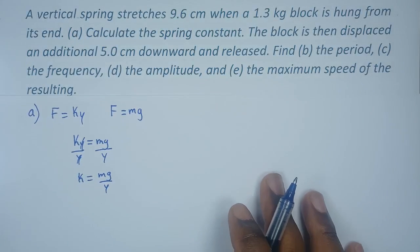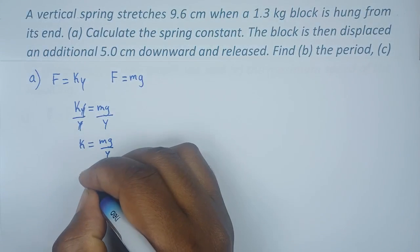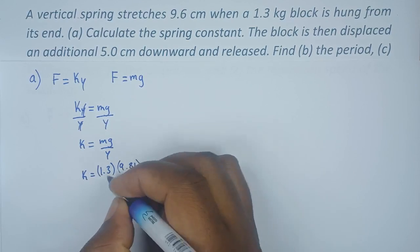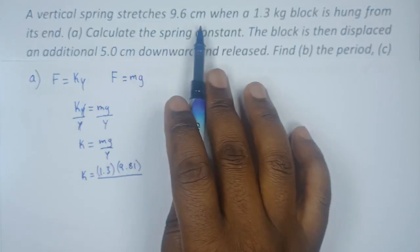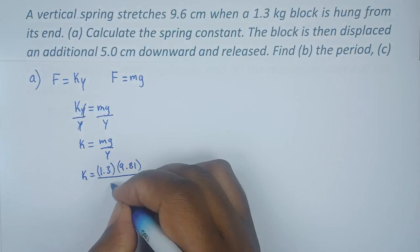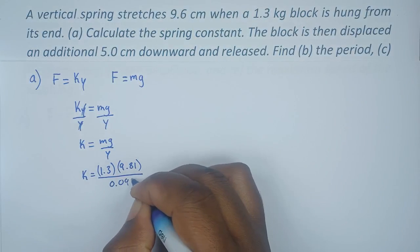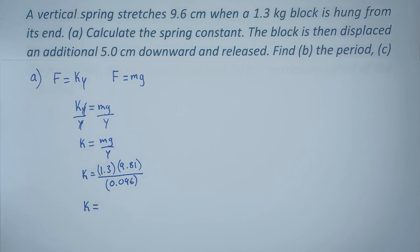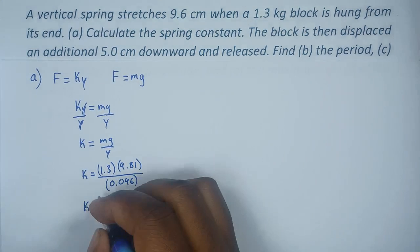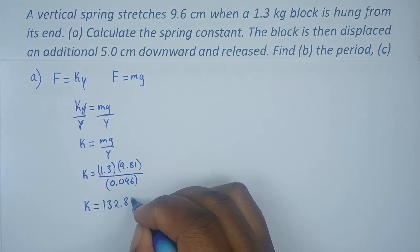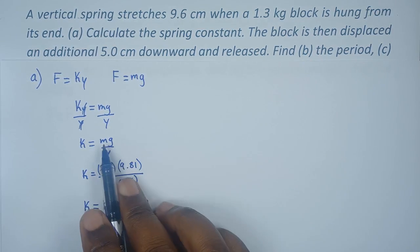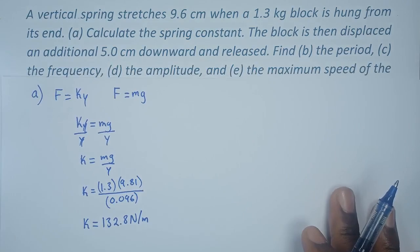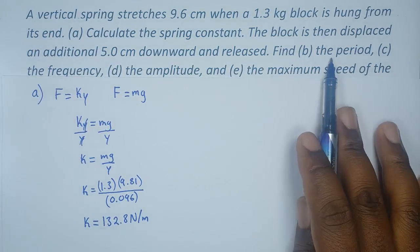Now that we have this, it's just a matter of doing our substitutions. So k equals mass, which is 1.3, multiplied by acceleration due to gravity, divided by the displacement, which is 0.096 meters. Let's compute the spring constant. We obtain 132.8 newtons per meter. So we have the spring constant.